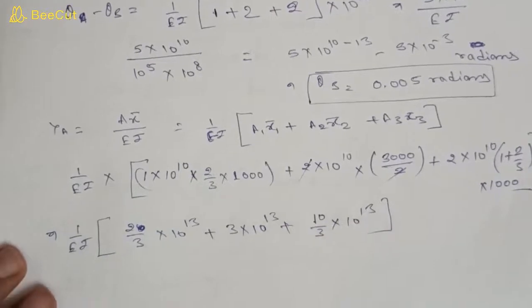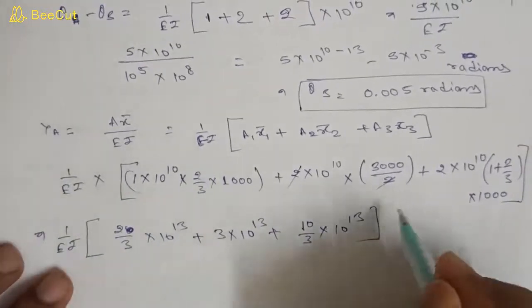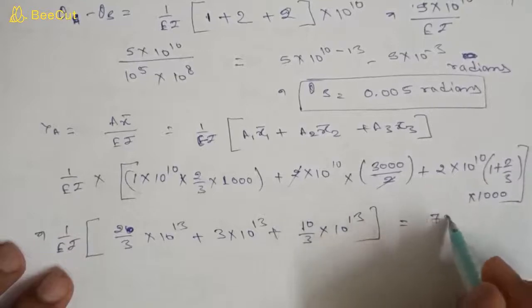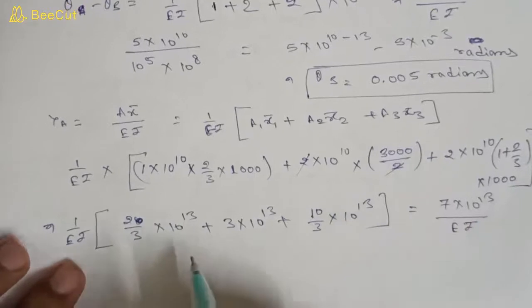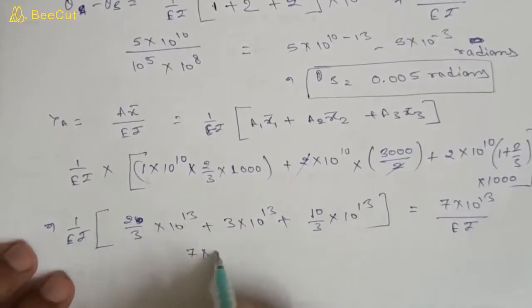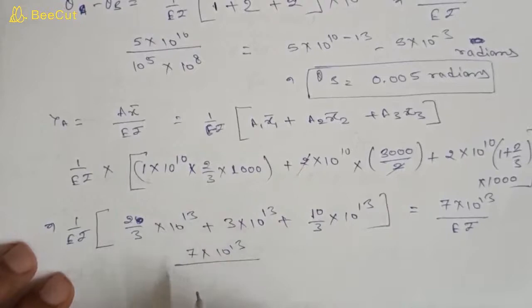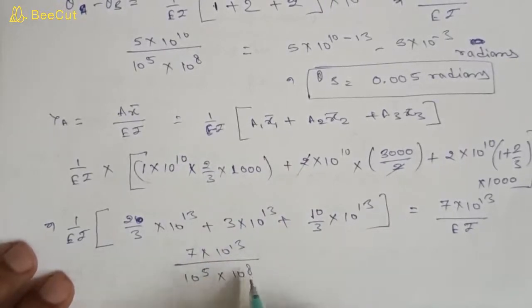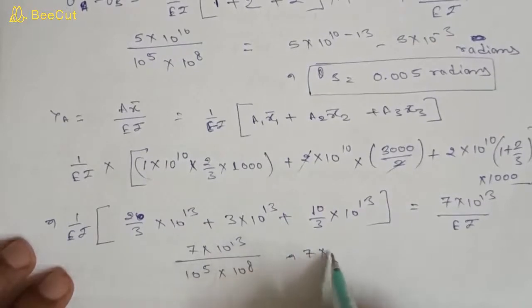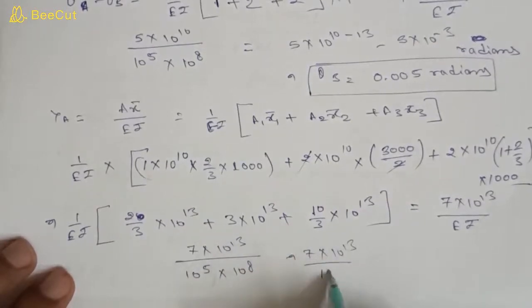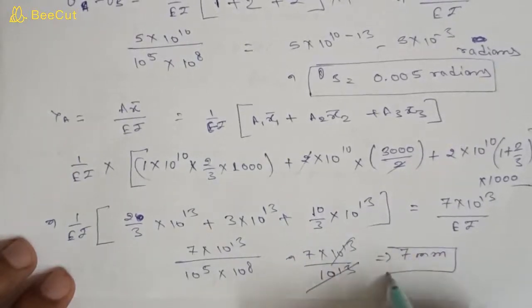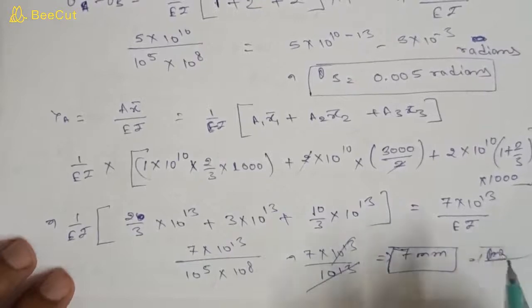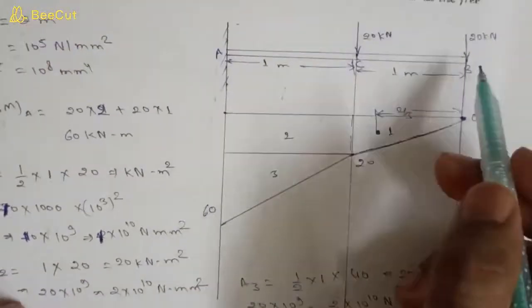Adding all three terms gives 7 into 10 to the power 13 divided by EI. Substituting EI: 7 into 10 to the power 13 divided by (10 to the power 5 into 10 to the power 8) equals 7 into 10 to the power 13 divided by 10 to the power 13, which equals 7 mm. So the deflection at the free end of the cantilever beam is 7 mm.